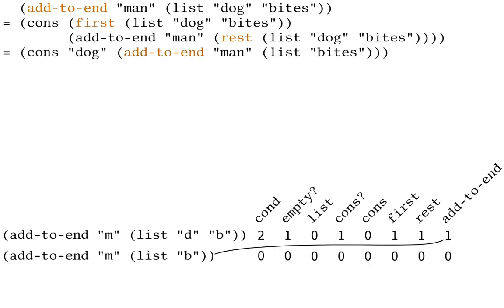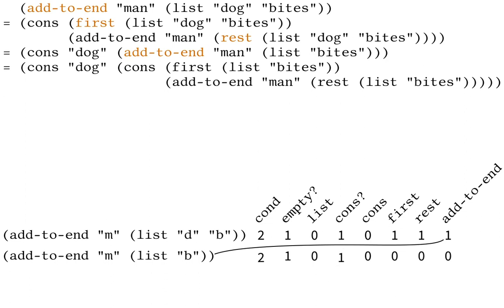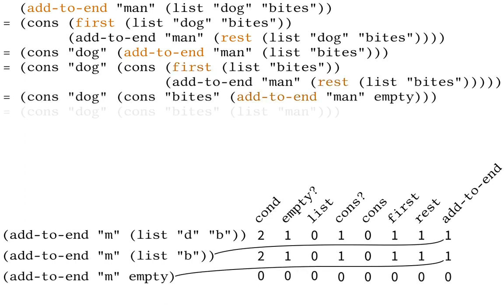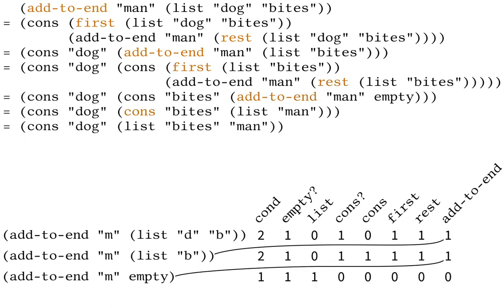So far, so good. But we're not done yet, because the recursive call to addToEnd still has to run. And after the recursive call is done, there is still a cons operation before we're finally done.